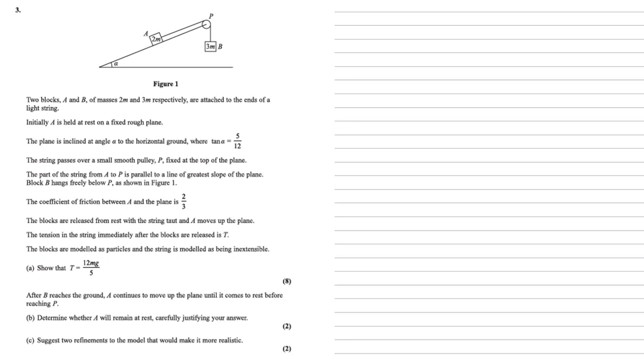For part A we need to show that T equals 12mg over 5. So firstly let's label our diagram. We've got the masses of A and B as 2m and 3m. So the force due to gravity on A must be 2mg and the force due to gravity on B is 3mg. We've also got the tension in the string. So we've got tension pulling A towards P and the exact same tension pulling B towards P. A is lying on a slope so we know that there's the resultant force R. And the slope is rough so there must be a force due to friction which is the coefficient of friction which we've been told is two thirds times by R.